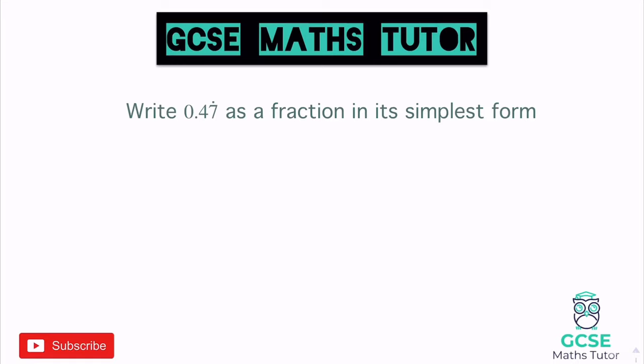In today's video we're going to have a look at recurring decimals and writing them as fractions. So grab a piece of paper, make some notes, and we're going to kick start with this question. It says write 0.47 with a recurring dot above the 7 as a fraction in its simplest form.